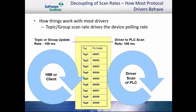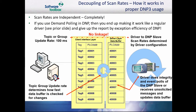DNP3 decouples the scan rates with proper usage. In most drivers, the topic or group scan rate in the HMI client drives the device polling rate. The client will send a request for data at a given update interval, and this is passed to the driver layer causing a scan of the devices at the same rate. With proper DNP3 usage, the scan rate between the client and server and DNP3 master and slave are completely independent. The client sends a data update request at one interval causing the client to pull the driver data buffer at this rate, while the driver is performing integrity and event pulls at the rate specified in the driver, updating the buffer at these rates.